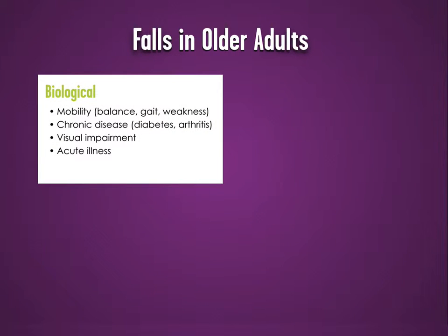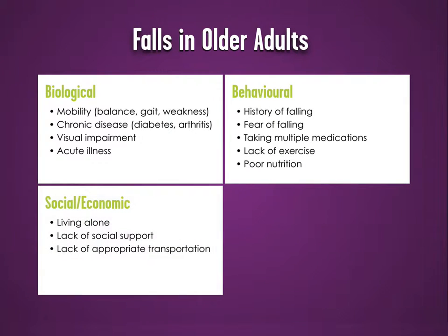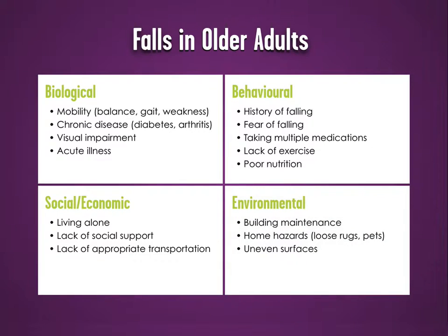Biological factors include mobility, chronic disease, visual impairment, and acute illness. Behavioral factors include history of falling, fear of falling, taking multiple medications, and lack of exercise. Social and economic factors include living alone, lack of social support, and lack of appropriate transportation. Environmental factors include building maintenance, home hazards, and uneven surfaces.